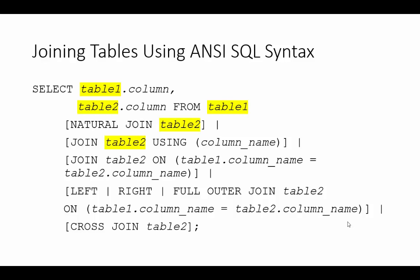This is the syntax for joining tables and it has a lot of options. You'll see many brackets representing optional clauses. The syntax includes table 1 and table 2 with their columns. Options like natural join, join using, join table on, and left, right, or full outer join are all optional. We'll go through most of these in the next few slides.